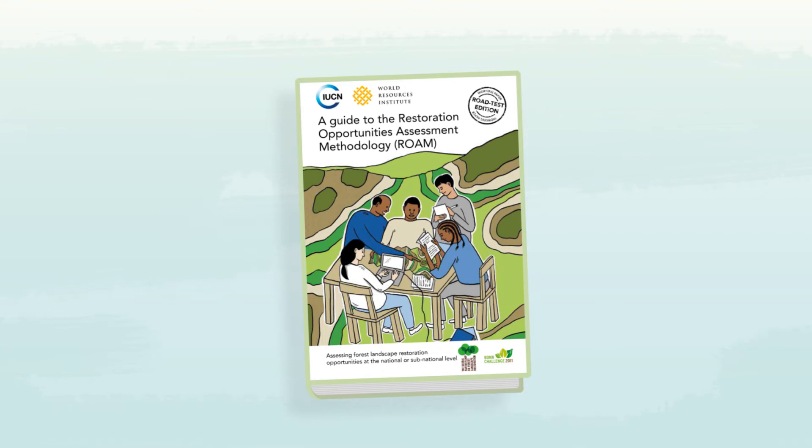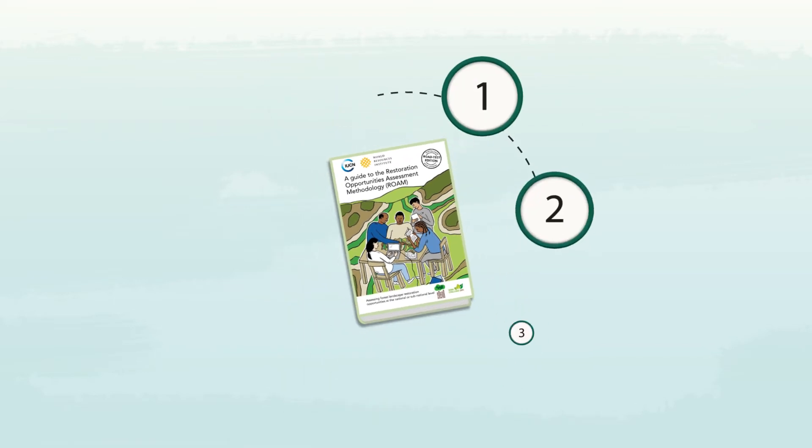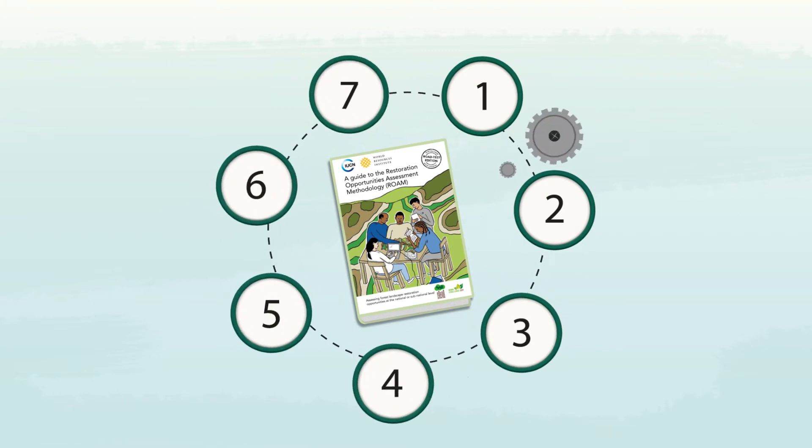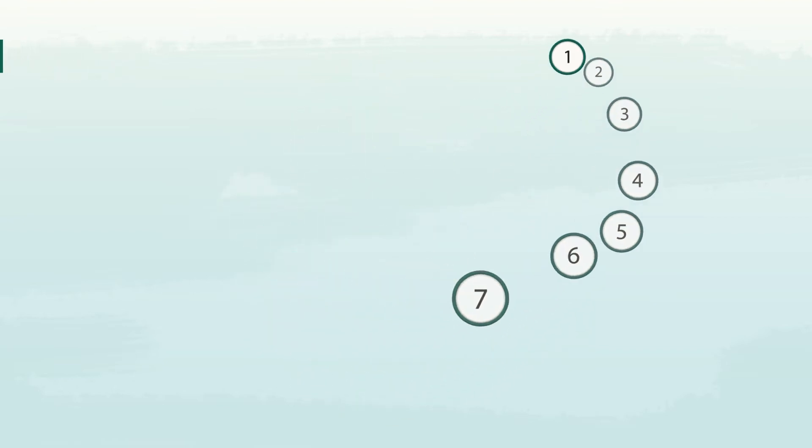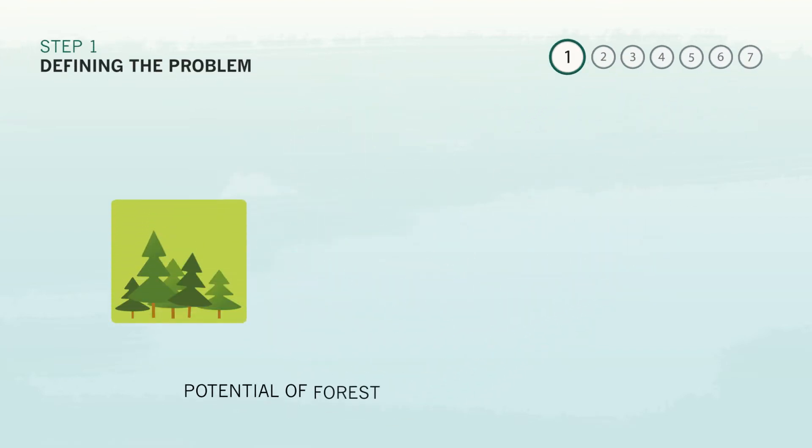The Restoration Opportunities Assessment Methodology, or ROAM in English, was designed by IUCN and the World Resources Institute to help countries and communities answer these questions and prepare for success in restoring degraded landscapes. The first step in an assessment is always to define the problem that restoration should tackle.